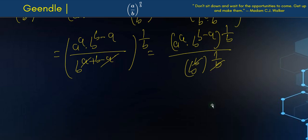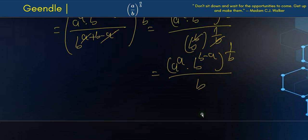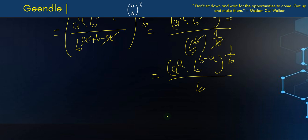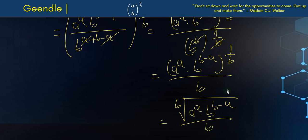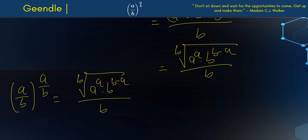From here we have that this is going to be a to the a times b to the power of b minus a, all to the power of 1 over b, all over b. We can rewrite this expression as: the b-th root of a to the a times b to the b minus a, all divided by b. So this is the general expression for this simplification — a over b to the power of a over b equals the b-th root of a to the a times b to the b minus a, over b.